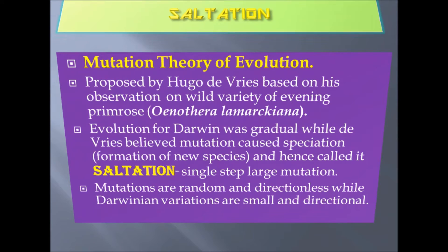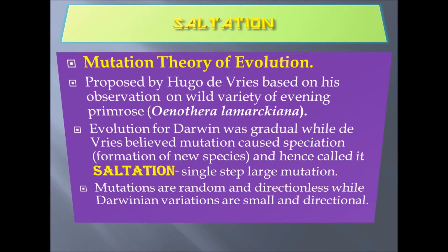Mutation theory of evolution was proposed by Hugo de Vries based on his observations on the wild variety of evening primrose, i.e. Oenothera lamarckiana. Evolution for Darwin was gradual, while de Vries believed mutation caused speciation, i.e. formation of new species, and called it saltation. Saltation means single-step large mutation. Mutations are random and directionless, while Darwinian variations are small and directional.